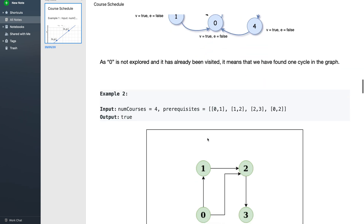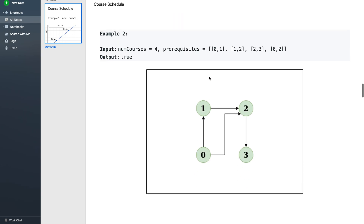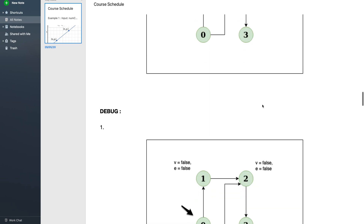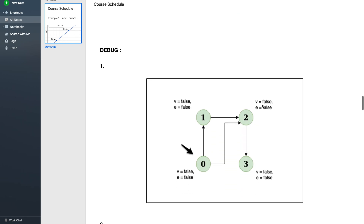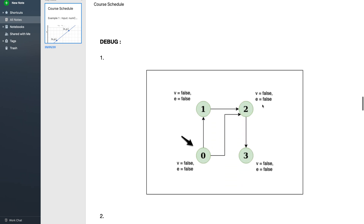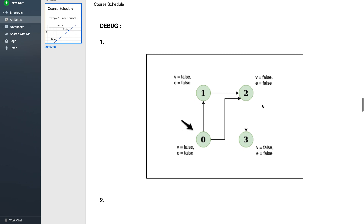Let's consider one more example. Here the number of courses is 4 and we are given a prerequisite array, which I've represented as a graph. Let's debug the same algorithm over this example — just wait a couple of minutes and the entire algorithm will make sense.